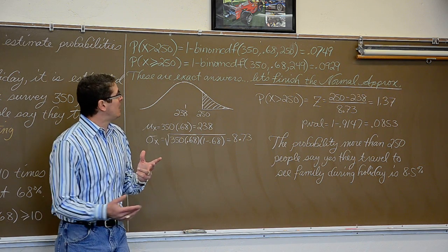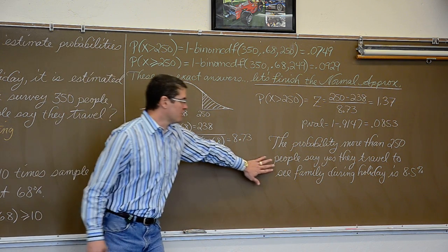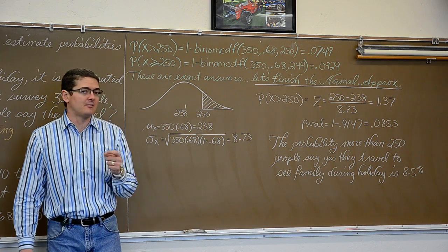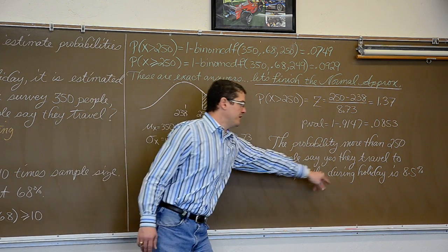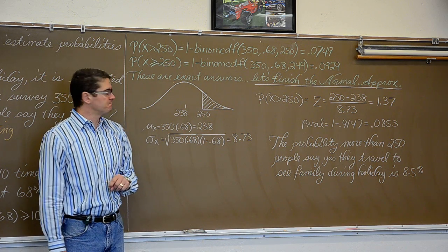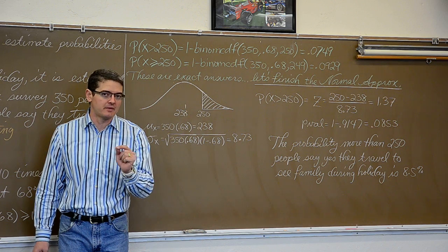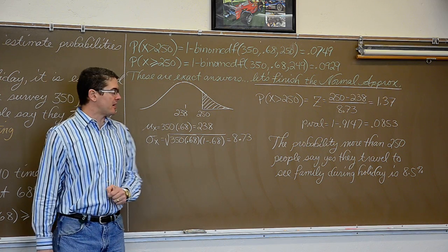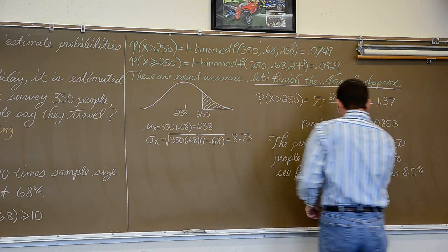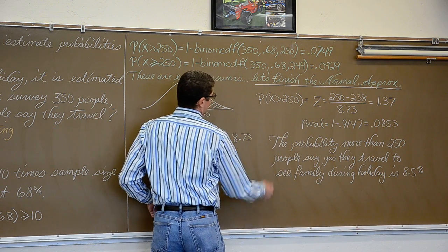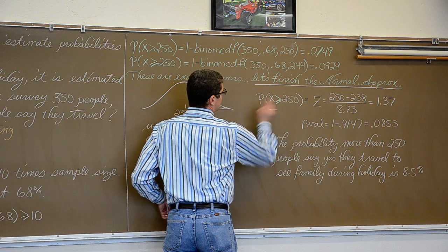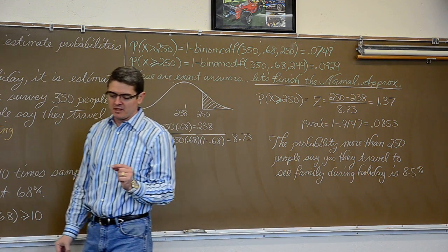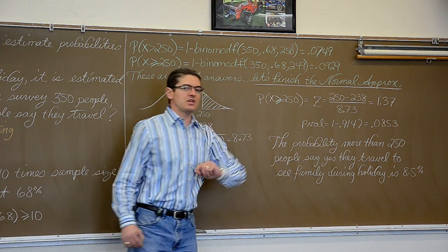So I am not really thrilled by summary now that I am reading it. The probability that more than 250 people say yes, they travel to see family out of a sample of 350 is 8.5%. Now just to reiterate one more time that this is a normal approximation and we are using a smooth continuous bell curve to make that normal approximation. If I were to change the wording and say that I want the probability that x is greater than or equal to 250, that would not change my final p-value. It would not change my final probability. It will however require me to change my wording.